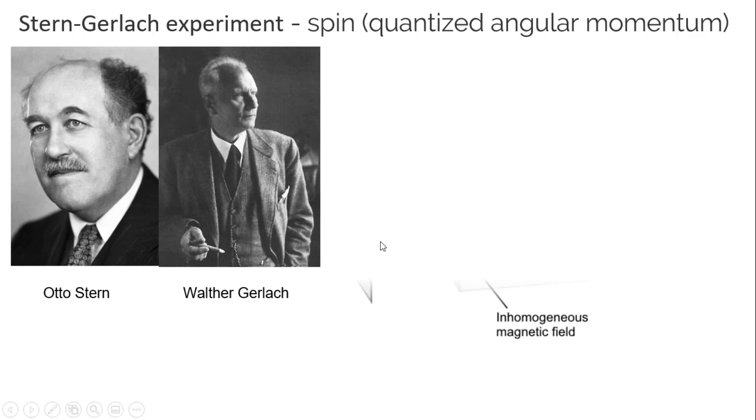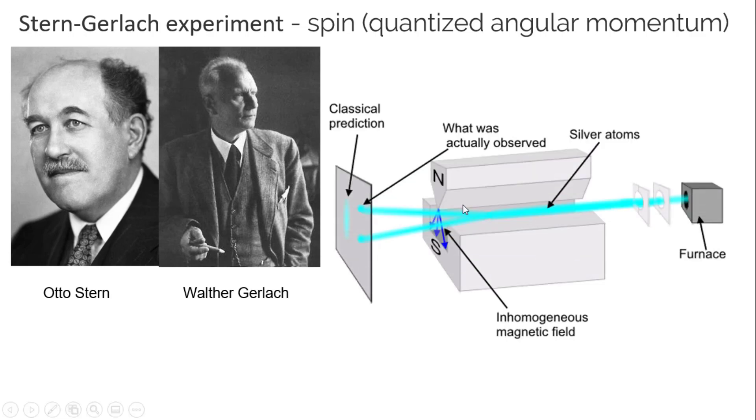So in their experiment, what they did is they wanted to figure out what would happen if you sent silver through an inhomogeneous magnetic field.